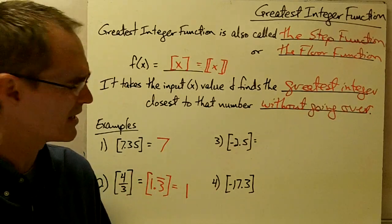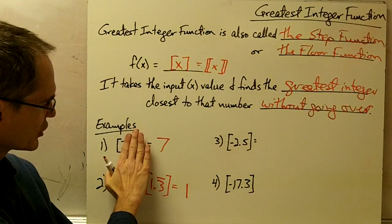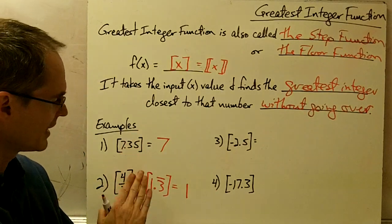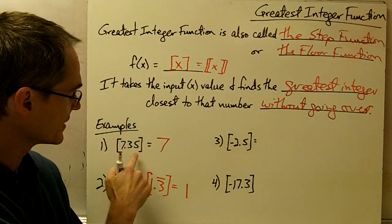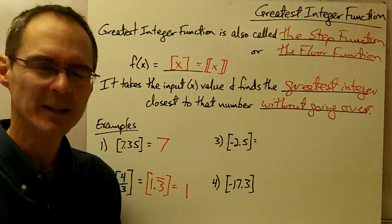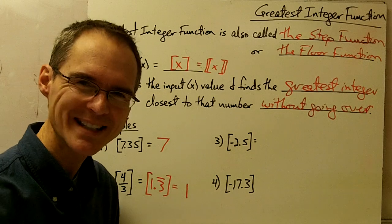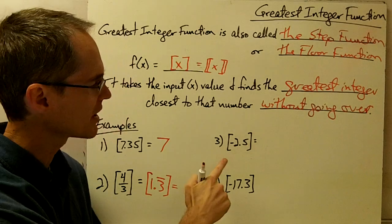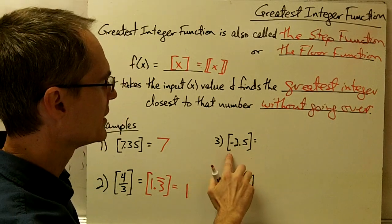You might be thinking this seems pretty simple — all we've got to do is just chop off the decimal part of whatever is inside the brackets and we're done. Except when you have to deal with negative numbers, it's a little bit different.